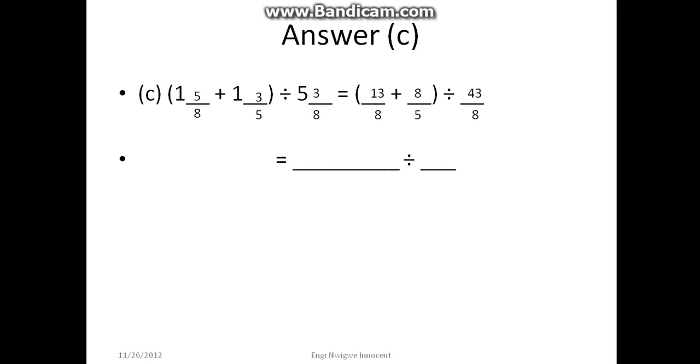We get the LCM of 8 and 5, which is 40. 8 divided by 40 gives us 5, 5 times 13 is 65. 5 divided by 40 gives us 8, 8 times 8 is 64. The numerator is 65 + 64 over 40, divided by 43/8.